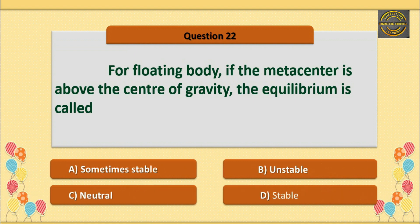Q22: For a floating body, if the metacentric height is above the centre of gravity, the equilibrium is called — Option D is correct — unstable.